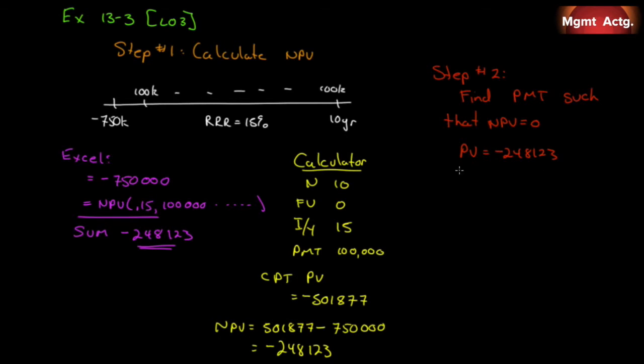So let's figure out what we need. On the calculator our present value is negative $248,123. We know that our I/Y is still 15, our N is 10, our future value is still 0, and now we want to compute PMT. And when we compute PMT we will get $49,439. And if you use Excel, you'll find that if you hit equals PMT it's going to ask you for exactly these variables. It's going to ask you for the rate, there's 15, it's going to ask you for the number of periods, 10, it's going to ask you for the present value which is 248, ask you for the future value.